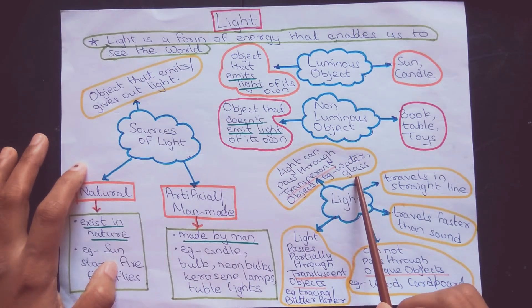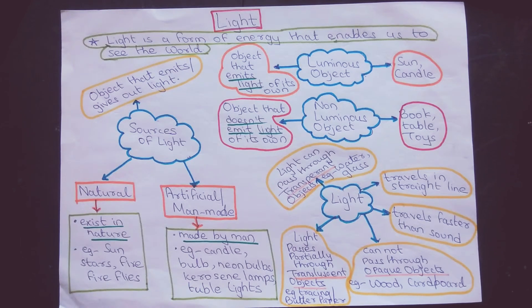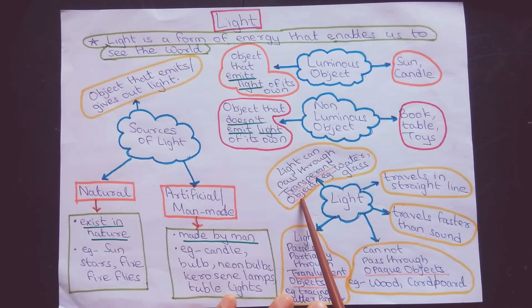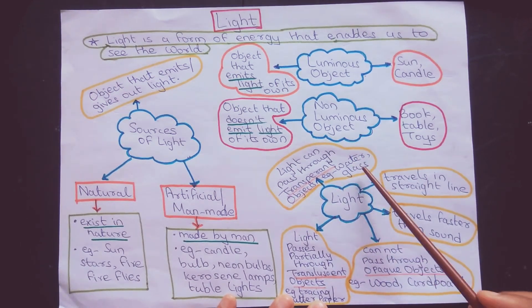Light can pass through transparent objects. Examples include water and glass. That means the substances or objects which allow light to pass through them. These objects are known as transparent objects: water, glass, etc.